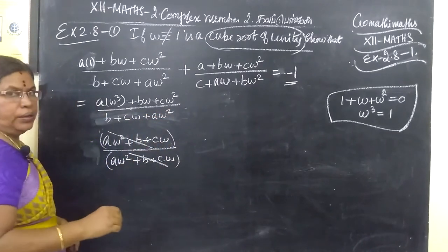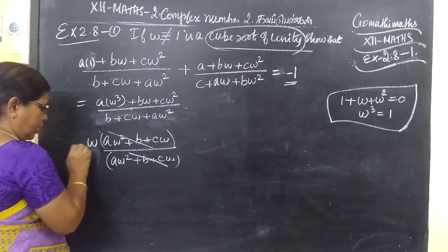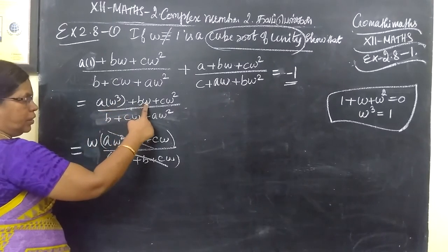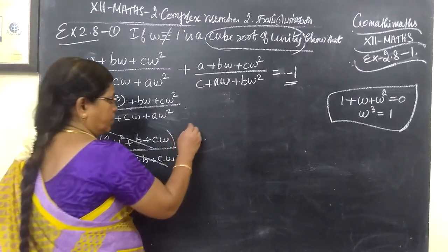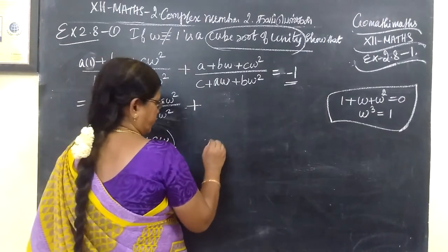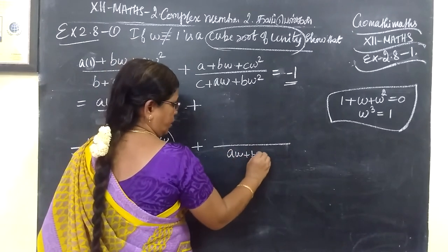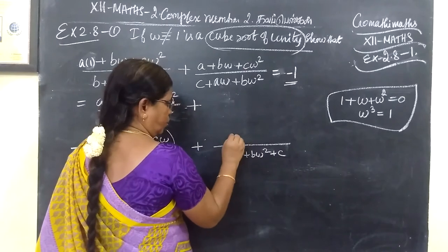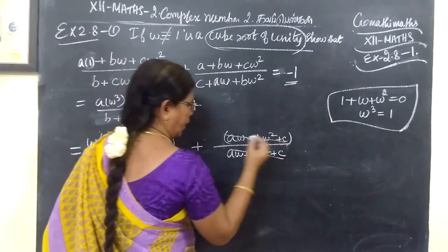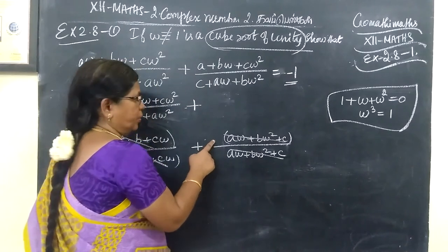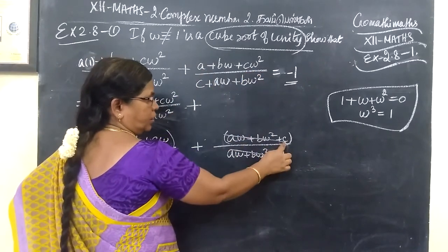To add one, we write ω as 1. Then we write: a·ω plus b·ω² plus c in the numerator. The numerator becomes: a·ω plus b·ω² plus c. This gives us c·ω² and then simply c.